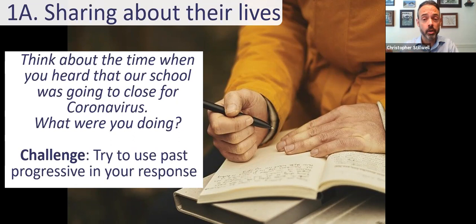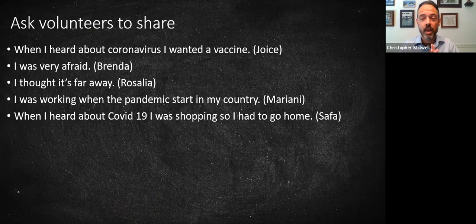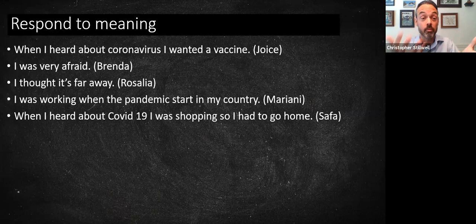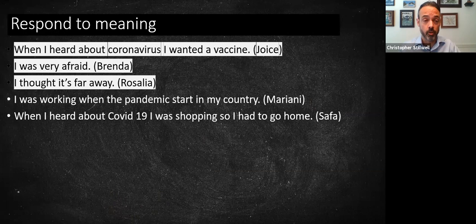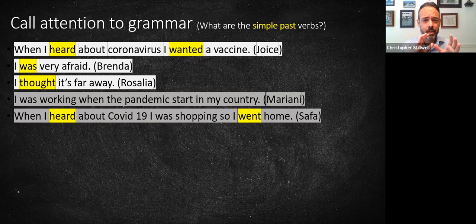Maybe students share with their partners or maybe you collect their work. I like to ask volunteers to share what they've written — in a big class, one person over here, one person over there; in a small class, maybe everybody shares. I put the sentences on the board and then respond to the meaning. I look at what they're saying and convey that they have communicated well. The first three people might be talking about their emotions and feelings, and I might share how I had similar reactions myself. The last two might capture the moment of their experience — what they were doing at that time.